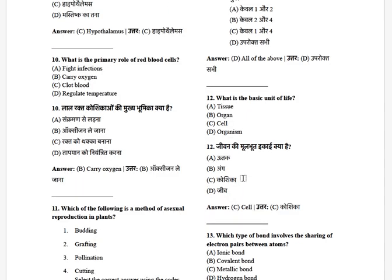What is the primary role of red blood cells? The options are: fight infections, carry oxygen, clot blood, and regulate temperature. The answer is carry oxygen.